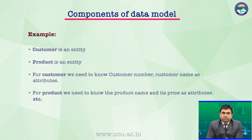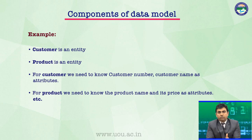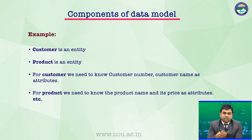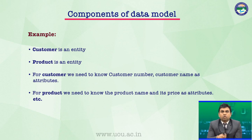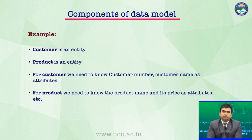Example — customer is an entity, product is an entity। customer के attributes की बात करें तो: customer number, customer name, age, date of birth — ये सब उस customer की characteristics बताते हैं, तो इनको हम attributes कहते हैं। ऐसे ही product है — product we need to know the product name and its price — वो attributes हैं। That is an example of entity and attributes.